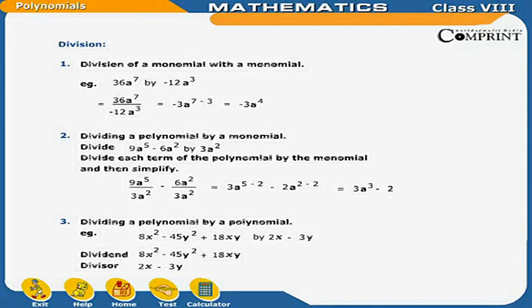Division 2: Dividing a polynomial by a monomial. Example: divide 9a⁵ minus 6a² by 3a². Divide each term of the polynomial by the monomial and then simplify: 9a⁵/3a² minus 6a²/3a² equals 3a^(5-2) minus 2a^(2-2) equals 3a³ minus 2.